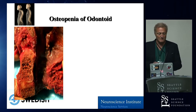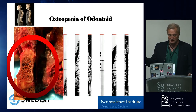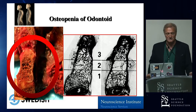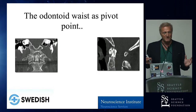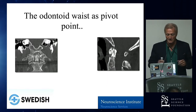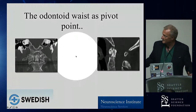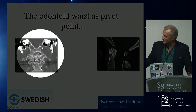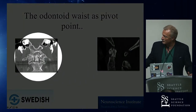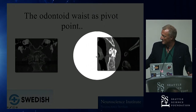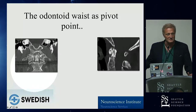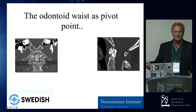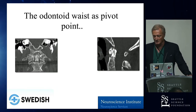What's the problem? Two things: A, osteopenia and the target zone at the waist of the odontoid — a physiologic phenomenon for which we have no answer. And B, the odontoid is a pivot point for our cranio-cervical junction. In a classic case with significant odontoid-atlantal pathology, you can see significant osteophytes and the atlanto-axial joints significantly stiffened up through an ankylosing process, which puts the pivot point of failure right at the waist of the odontoid.